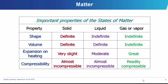Properties of matter: in the solid state, the shape of matter is always definite. If it is a solid, it has a definite shape and a definite volume. It expands only slightly, and it is almost incompressible — that is, it cannot be compressed.